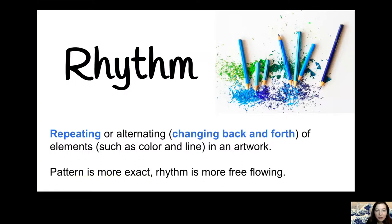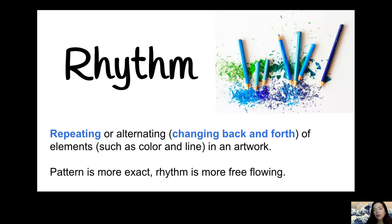Rhythm is the repeating or alternating — alternating means changing back and forth. Maybe if you alternate chores with a brother or sister, you change back and forth so you're not doing the same thing each week. But it's an alternating of the elements in an artwork, and it's usually color and line. That kind of sounds like pattern, which we talked about last week where you were repeating something. Well, pattern is more exact. Rhythm is more relaxed and doesn't have to be exact when you're creating it.